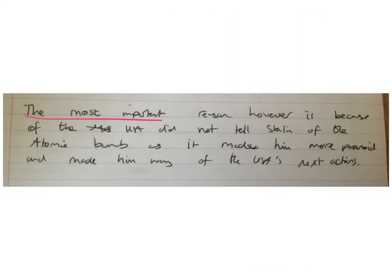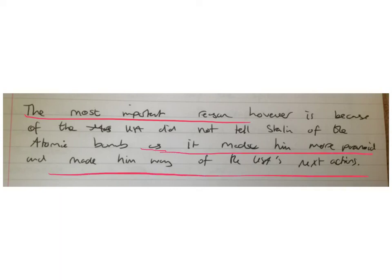Now to look at prioritising — this is actually somebody's conclusion. It's not particularly long; you don't have time to do a really long conclusion. But the thing that this person does, that a lot of you have failed to do and which stops you getting top marks, is he doesn't only say what was the most important reason. He goes on to say why — as it made him more paranoid and made him wary of the USA's next actions. He tries to explain what makes that point stand out.